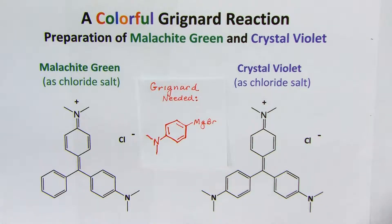To make these dyes, the Grignard reagent needed will be that from 4-bromo-NN dimethyl aniline, shown in red here. You can see how that piece shows up in the structures multiple times.